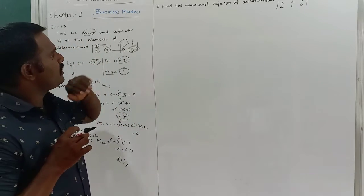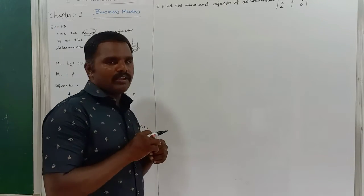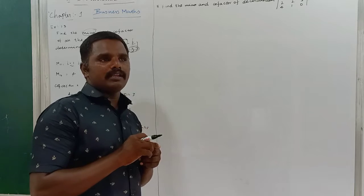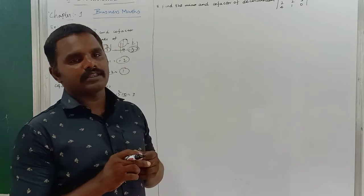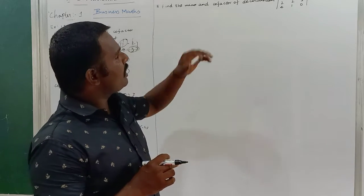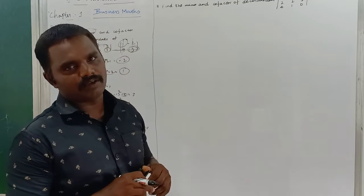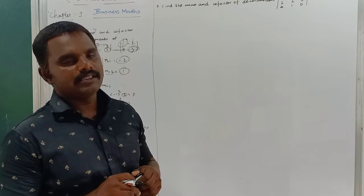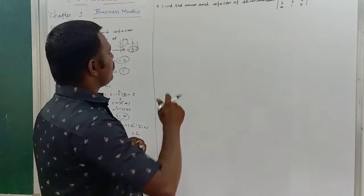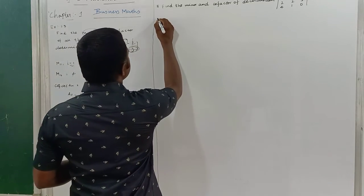How can we find the minor and cofactor of a 3×3 matrix? The matrix is: 3, 1, 2 / 2, 2, 5 / 4, 1, 0 — wait, with elements 4, 1, 0 in the third row. First we find the minors.